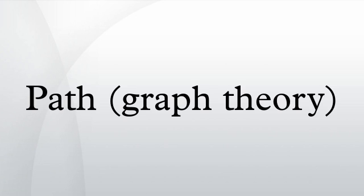In graph theory, a path in a graph is a finite or infinite sequence of edges which connect a sequence of vertices which, by most definitions, are all distinct from one another.